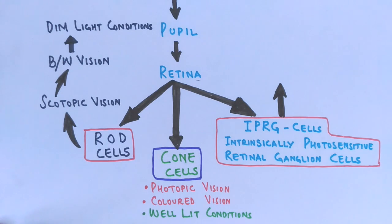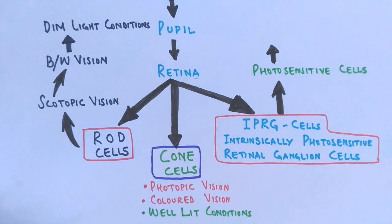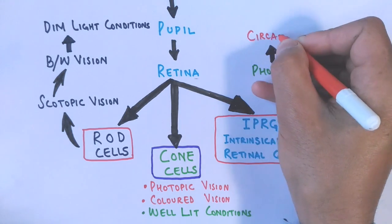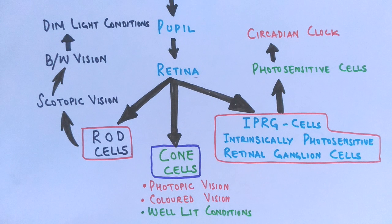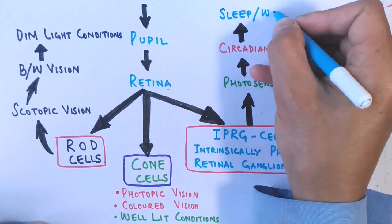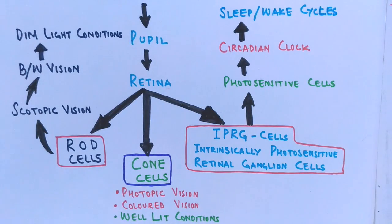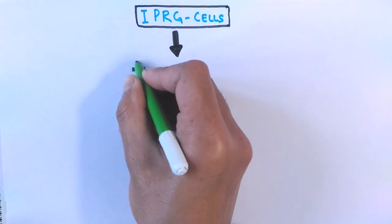The third cell type, intrinsically photosensitive retinal ganglion cells (ipRGCs), does not perceive vision but is used for synchronizing our body with light and dark cycles — day and night — via the circadian clock, which drives circadian rhythms. It has been shown that blind persons can also synchronize their actions to day and night via the circadian clock, since only rod and cone cells are damaged. Through the circadian clock, we detect timing of sleep and wake cycles via secretions from the pineal gland.